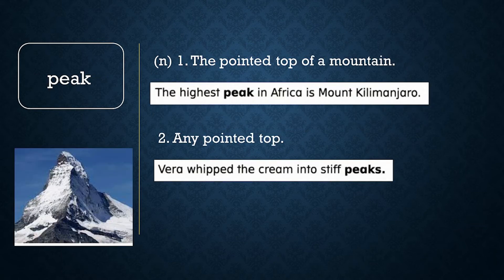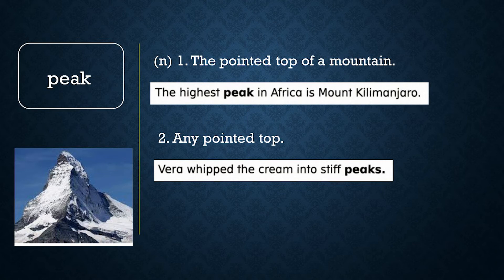Peak. Say, peak. Peak has two meanings. A peak is the pointed top of a mountain. The highest peak in Africa is Mount Kilimanjaro. A peak is any pointed top. Vera whipped the cream into stiff peaks. Now let's review word meaning. Choose A or B: which of these has a peak — A, a pyramid, or B, a basketball? If you said A, you're correct. Pyramids have pointed tops.